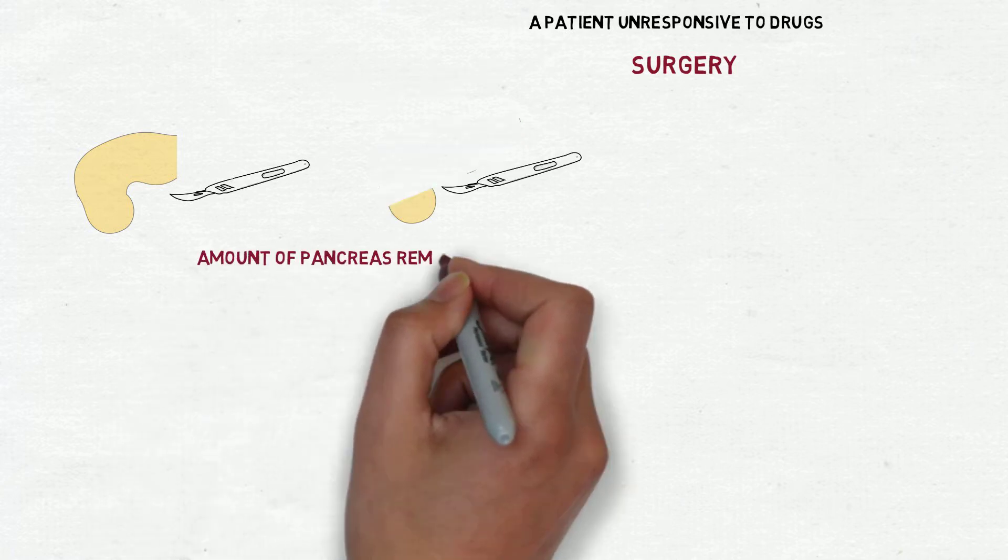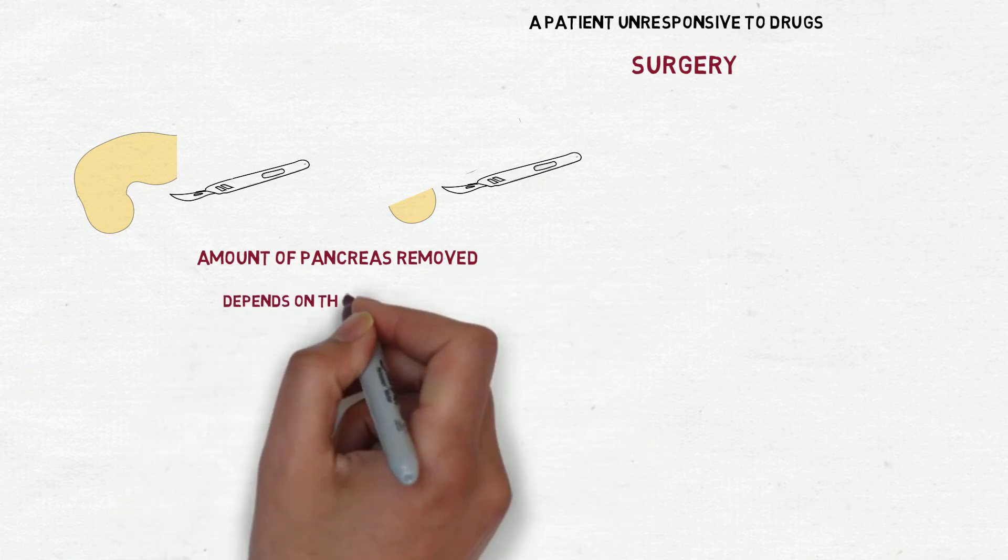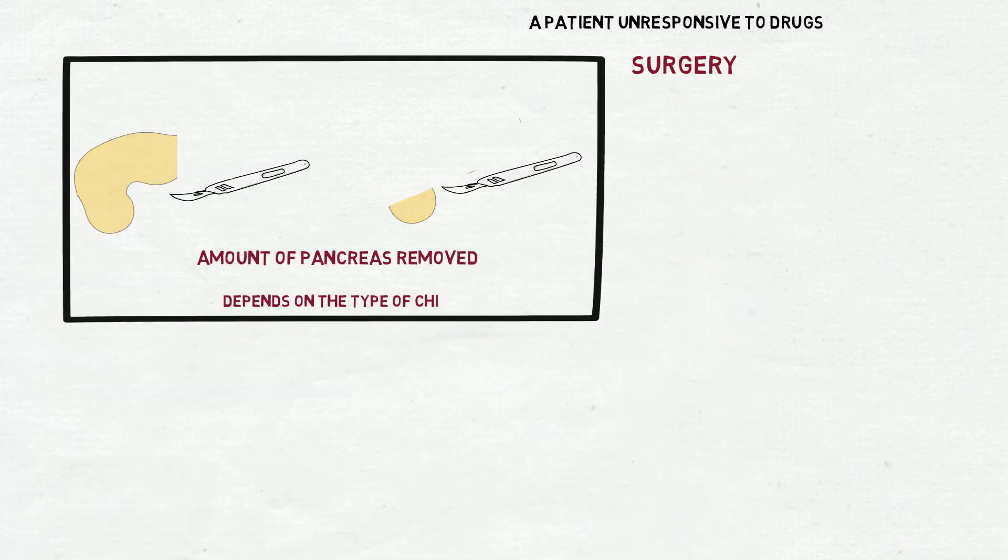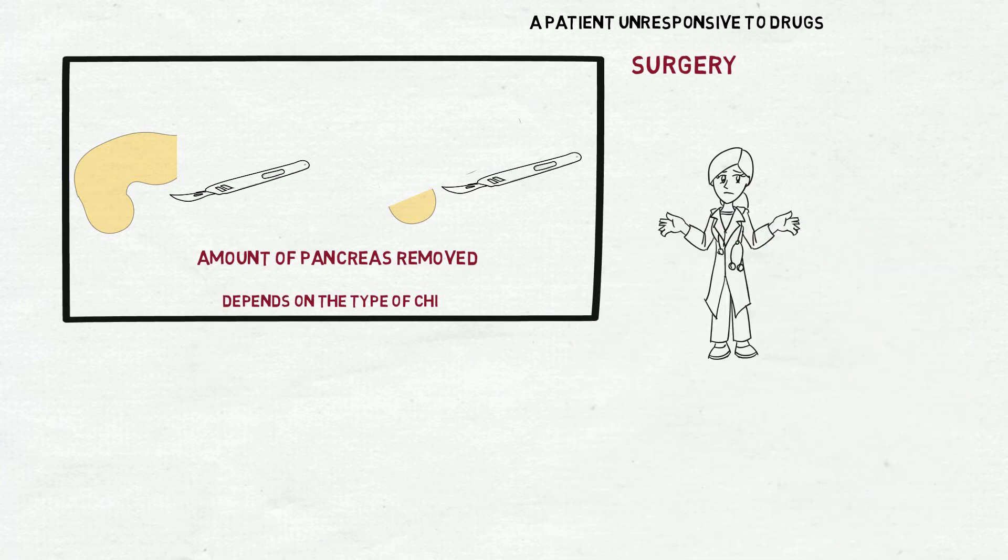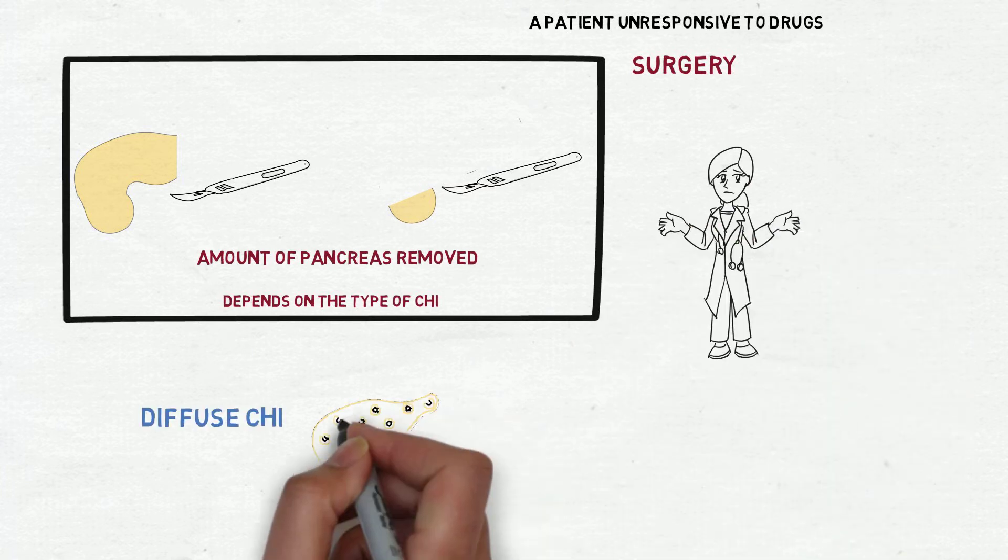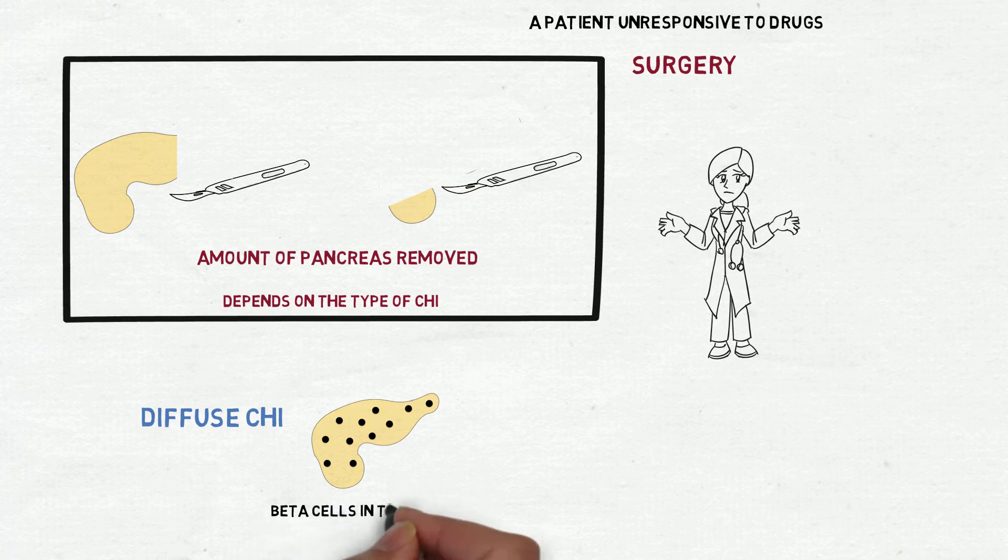The amount of pancreas removed by surgery depends on the type of CHI. Therefore doctors must be able to distinguish between diffuse CHI, a condition in which beta cells in the entire pancreas are affected,